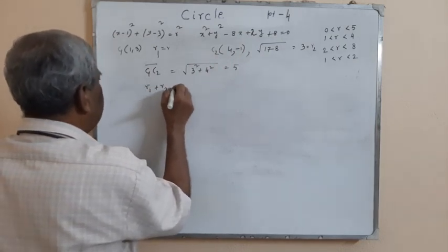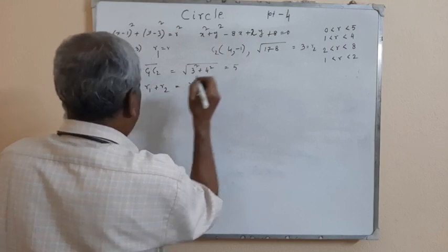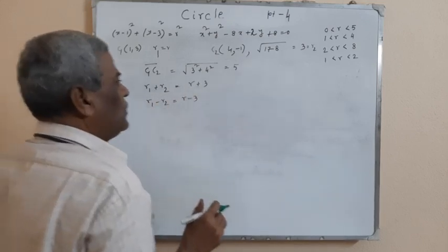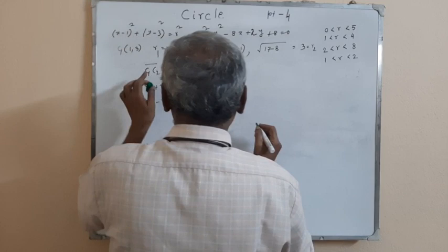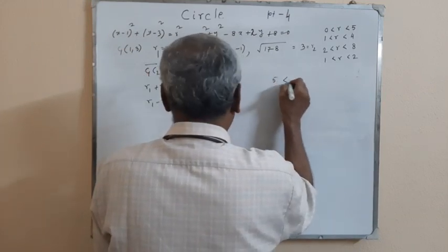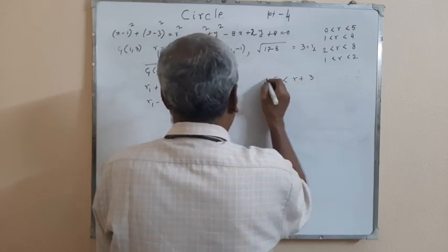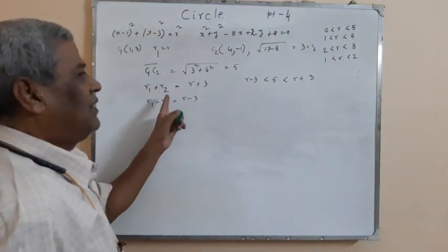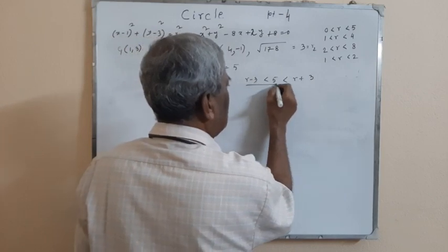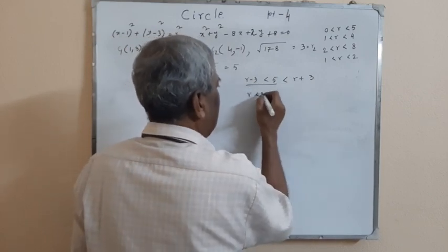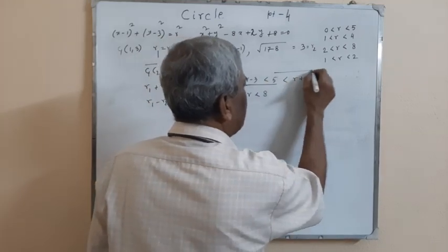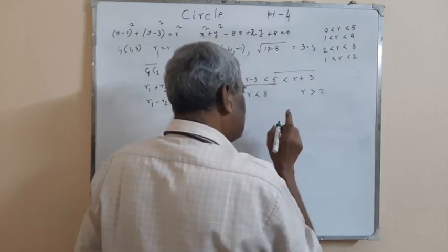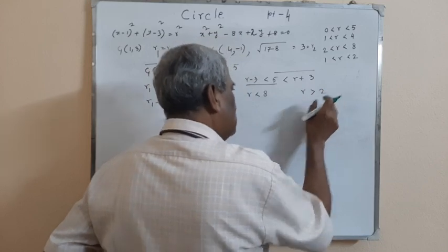The center-to-center distance c1c2 equals the square root of (4 minus 1) squared plus (minus 1 minus 3) squared, which equals the square root of 9 plus 16, equal to 5. So r1 minus r2 equals r minus 3 in magnitude. Applying the condition: 5 must be less than r plus 3, giving r greater than 2, and 5 must be greater than r minus 3, giving r less than 8. So the range of r is 2 less than r less than 8.